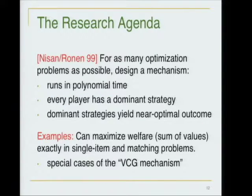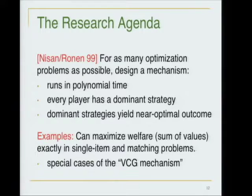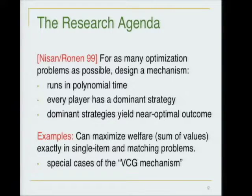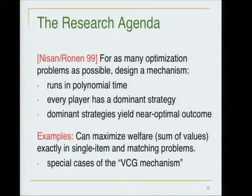If you ignore computational constraints you get a positive result with all the good properties of the Vickrey auction — but you do not get polynomial time. The algorithmic mechanism design research agenda, first broadly articulated by Nisan and Ronen over ten years ago, asks: what can we hope for assuming P ≠ NP? We'd like a polynomial-time algorithm, the best possible approximation ratio subject to P ≠ NP, and players incentivized to reveal their true preferences.